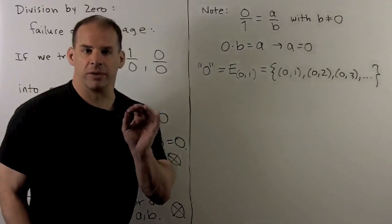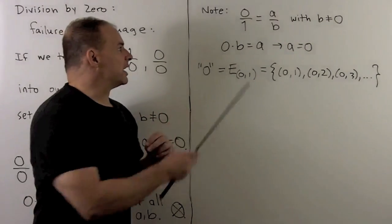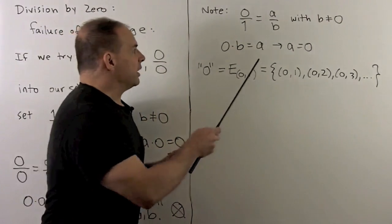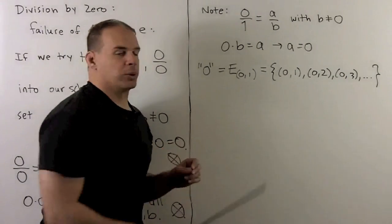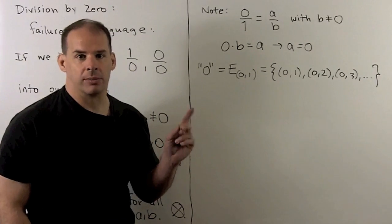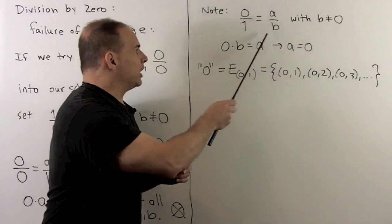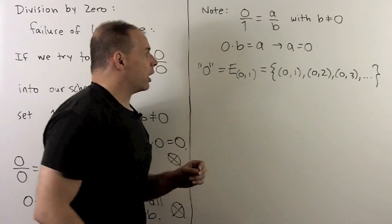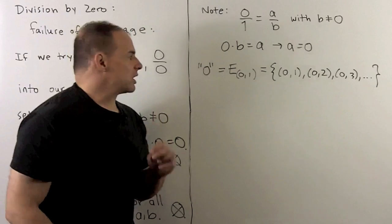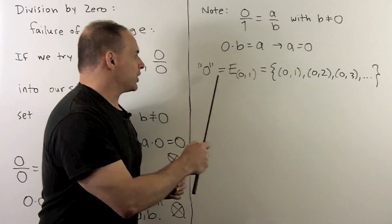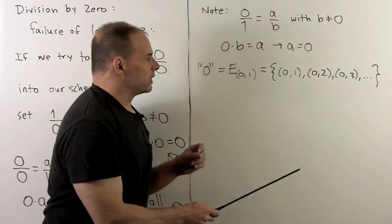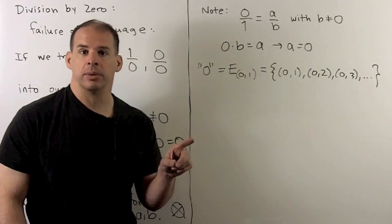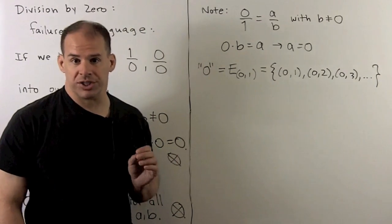Now, just to make sure everything's working, how about if I take 0 over 1? So, if I set that equal to A over B, with B not equal to 0 on the previous board, what comes out? The equation here is 0 times B is equal to A times 1. So, that just means A is equal to 0. So, for the equivalence class of 01, which is representing the number 0, we have things like 01, 02, 03, and so on. So, this makes perfectly good sense.